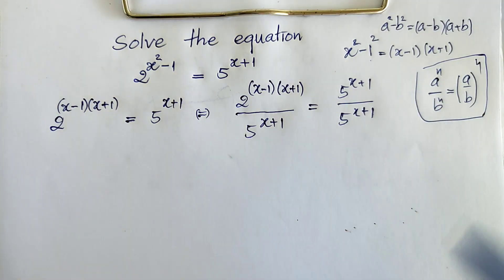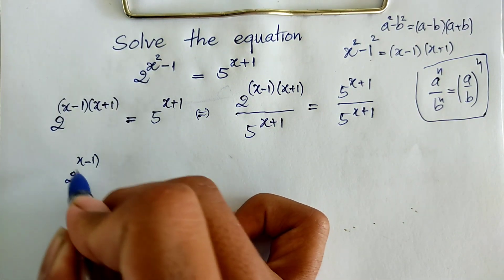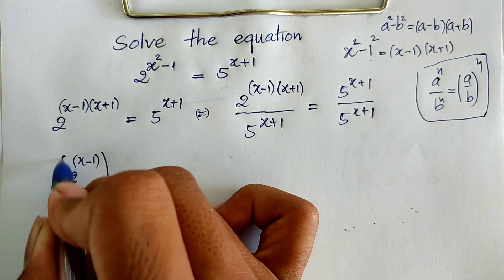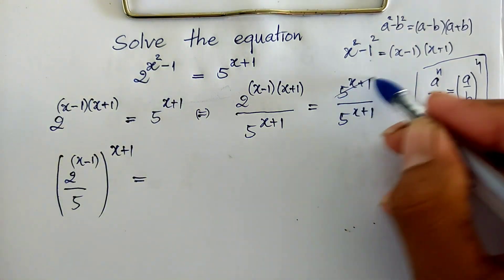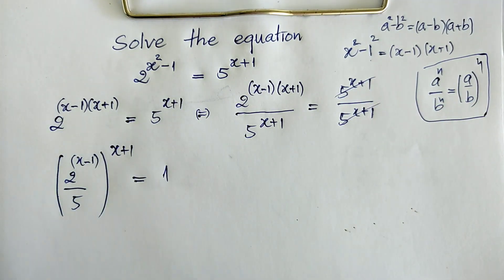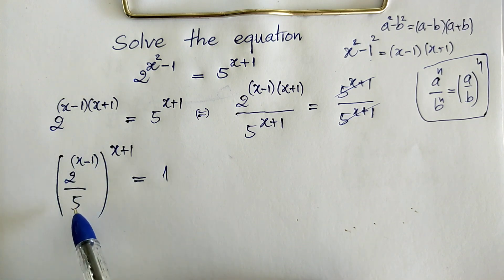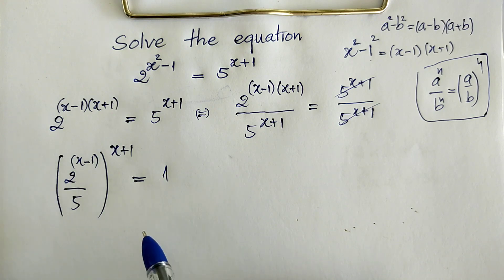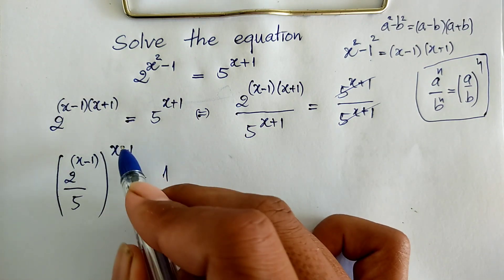Using that rule, we get (2 divided by 5) all to the power (x plus 1), and this equals 1. Now we simplify and get 1. So we have 2 power (x minus 1) divided by 5 to the power (x plus 1) equals 1. Now, if this equals 1 and if the exponent equals 0.